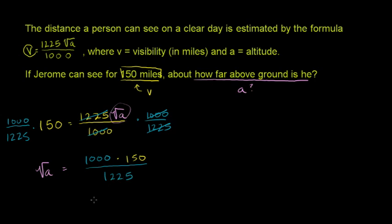And it looks like there's some simplification we can do here. Both of these numbers seem divisible by 25. This number up here, 150, that's 25 times 6. And this number right here, 1225, this is 25 times 49, if I'm doing my math right.